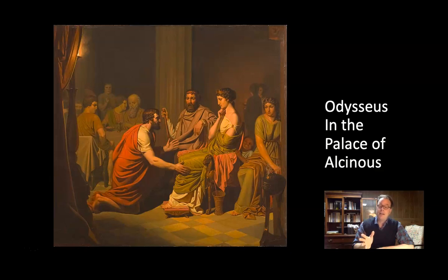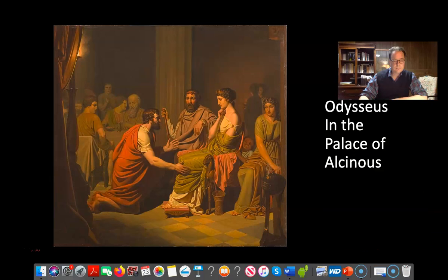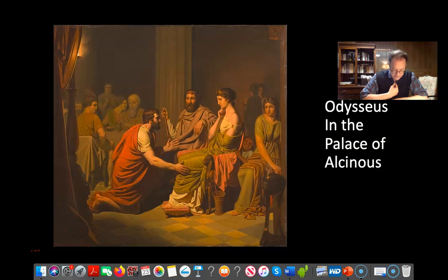It's not clear that he's doing it out of honesty — he almost can't help himself. He says: 'Now let me begin by telling you my name, so you may know it well. And I, in times to come, if I escape the fatal day, will be your host, your sworn friend, though my home is far from here. I am Odysseus, son of Laertes, known to the world for every kind of craft. My fame has reached the skies.' He doesn't mind singing his own praises. He's a man of every kind of craft, skill, and ingenuity, and his fame has reached all the way to Mount Olympus and Zeus. 'Sunny Ithaca is my home.'